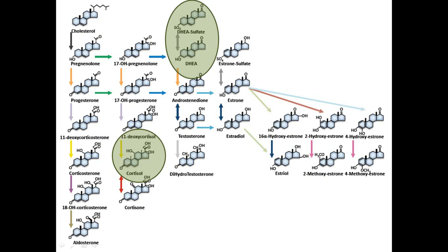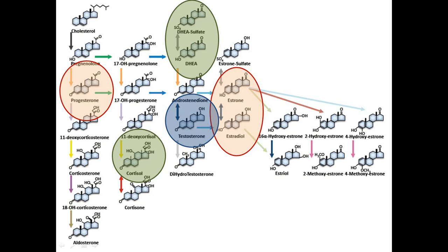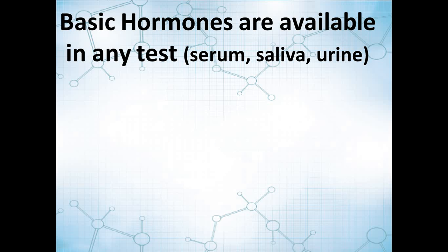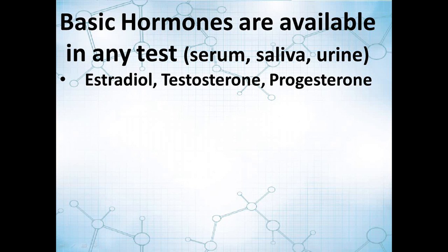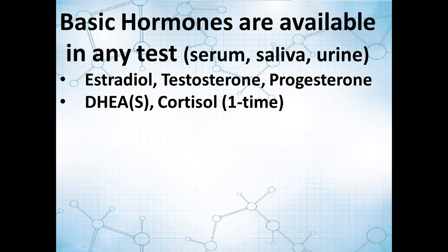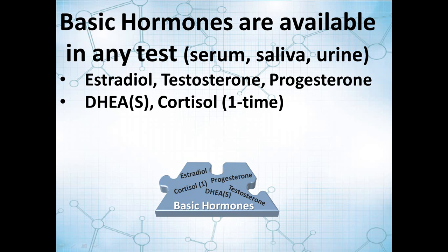When we talk about steroid hormones — the basic hormones for the adrenals — we're talking cortisol and DHEA. For the ovarian hormones, relevant in both women and men, we have estrogens, progesterone, and testosterone. Your basic hormones — estradiol, testosterone, progesterone, DHEAS, and cortisol — form the foundational basis of any hormone test and are available in any of the common testing modalities: serum, saliva, or urine.